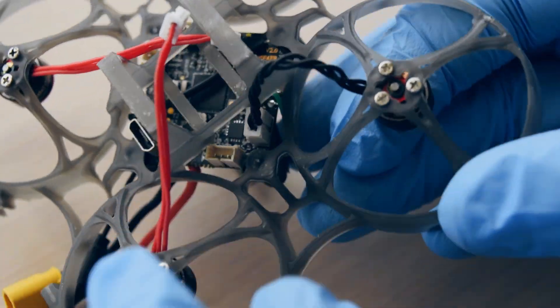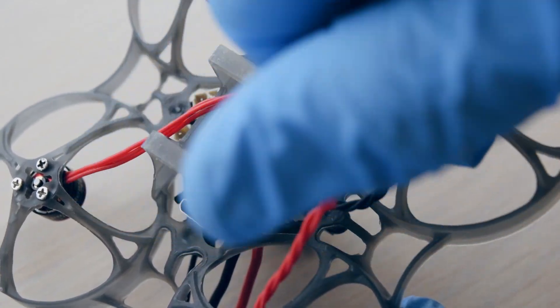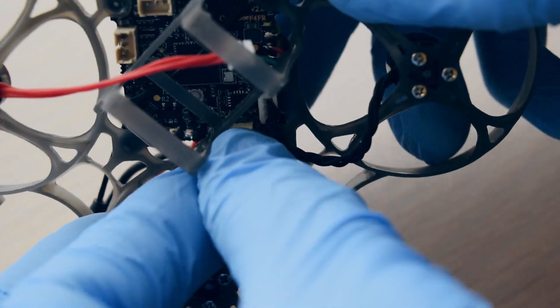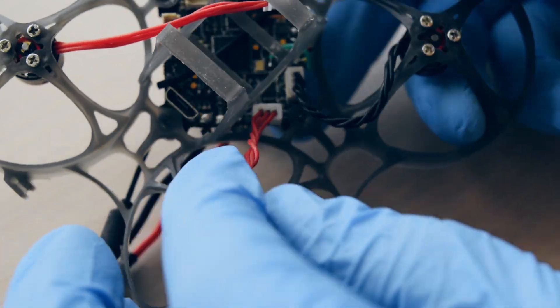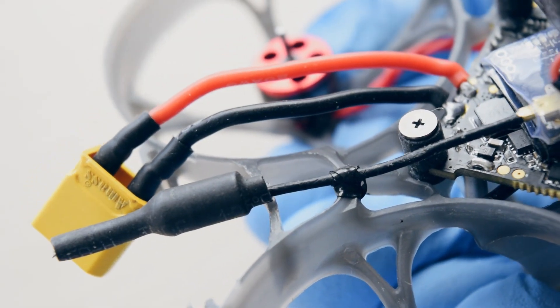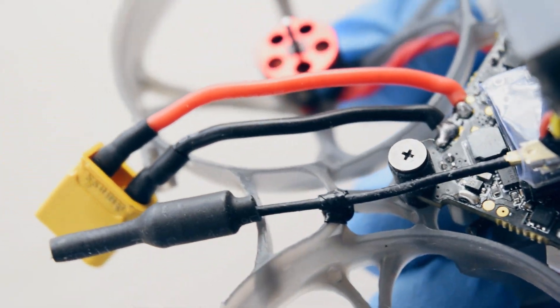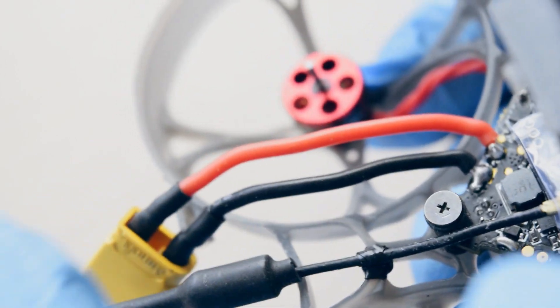Twist the motor wires and plug them back into the flight controller. I used a very thin strip of electrical tape to secure the antenna to the back of the frame.